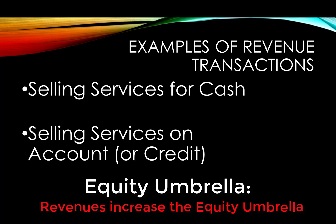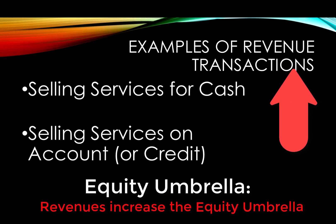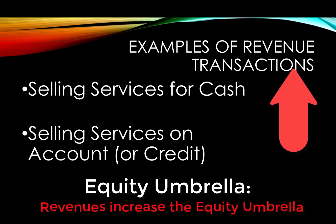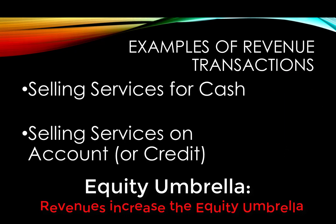Two types of revenue transactions are selling services for cash or selling services on account or for credit. Think of the barber or the salon that you go to — they generate their revenues either by collecting cash or by selling their service on account. Both increase the equity umbrella.